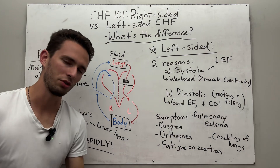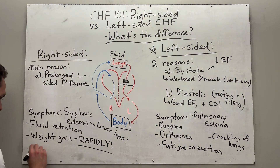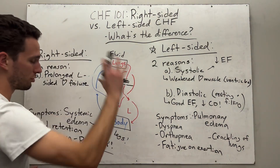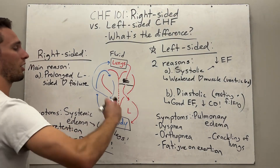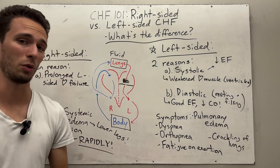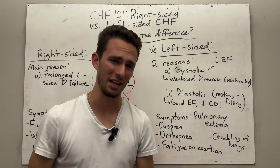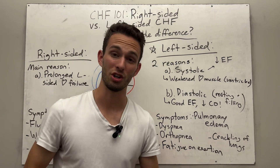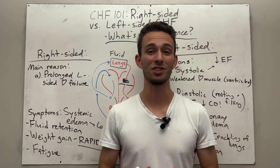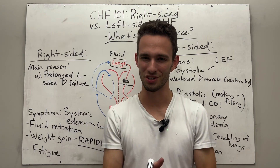Fatigue is another obvious symptom, since the body isn't getting properly oxygenated blood. That's also why diuretics and limiting fluid consumption are important — you want to get as much excess fluid out as possible. To summarize: fluid accumulates in the lungs with left-sided heart failure, and in the body with right-sided. I hope this congestive heart failure overview was beneficial — have a great day!